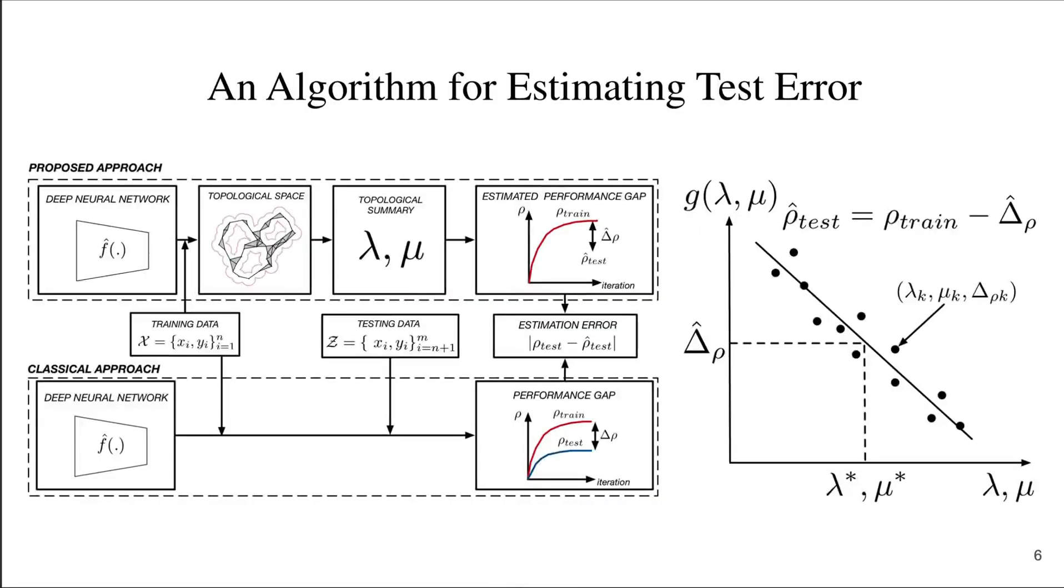We thus propose that in order to evaluate their algorithms, researchers and practitioners use the approach summarized on the screen. First, train your deep neural network with your training set. Then, compute the topology of the functional graph and estimate the generalization gap using the algorithm we provide on GitHub. If the estimated generalization gap is large, you need to change the network's topology, loss function, or use a larger training set. Make the appropriate modifications and repeat the process until the generalization gap, estimated by our algorithm, decreases sufficiently.